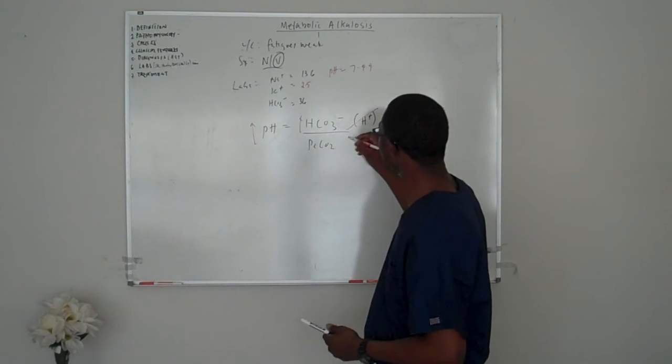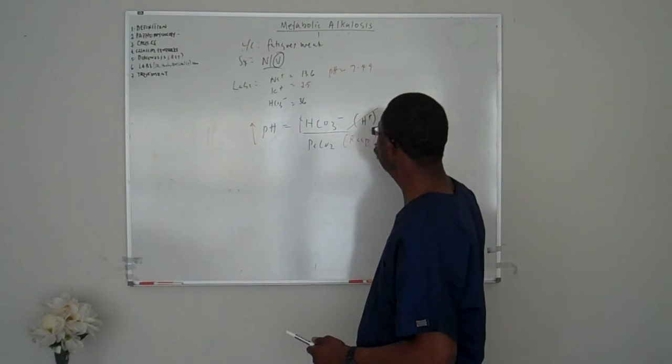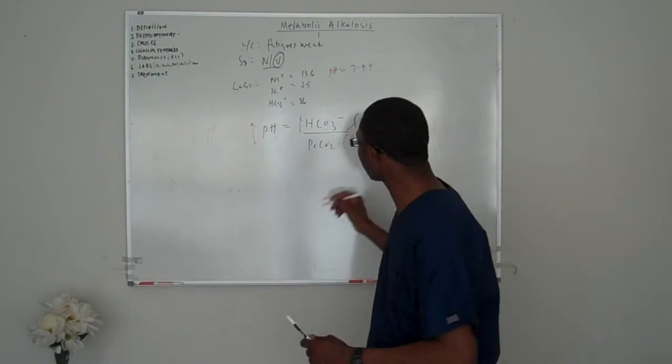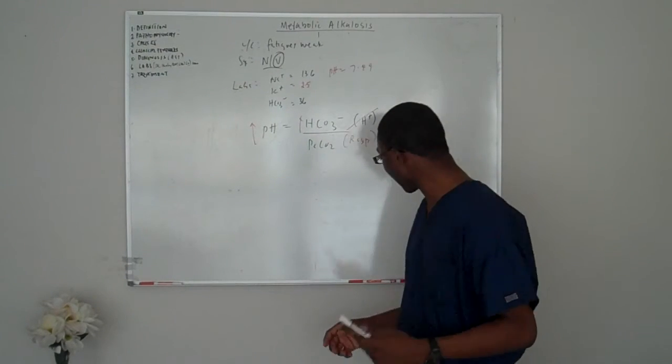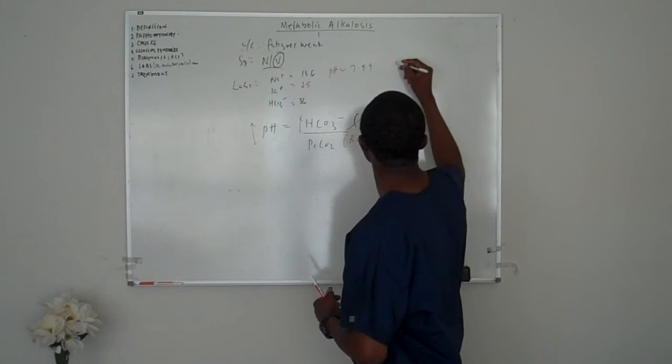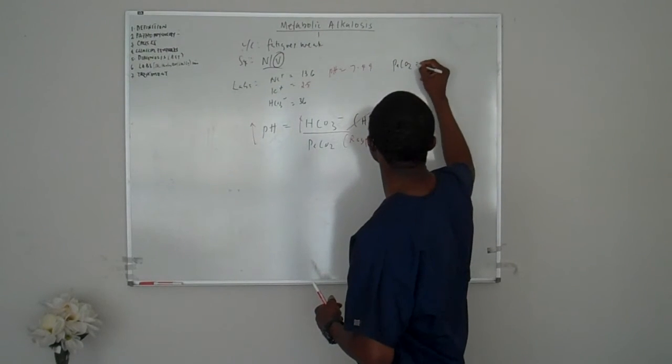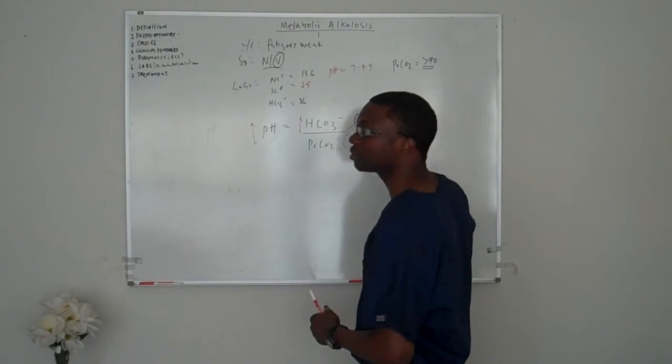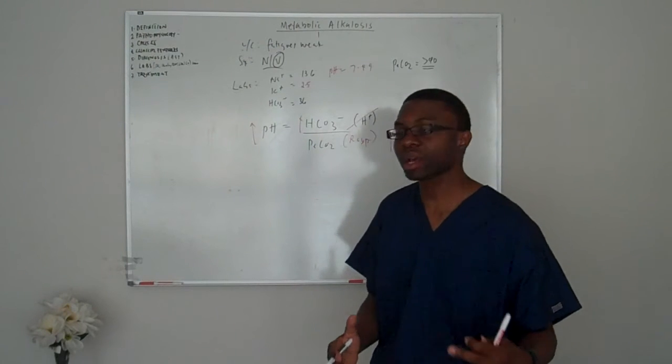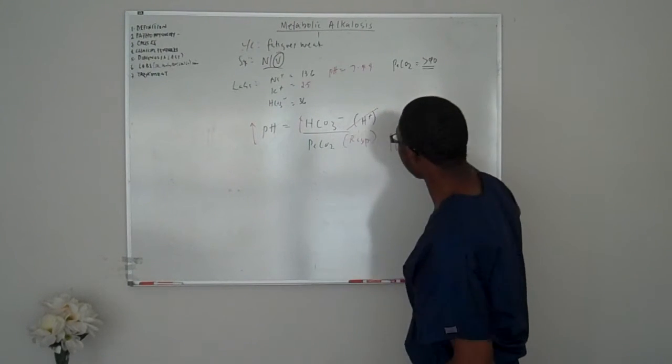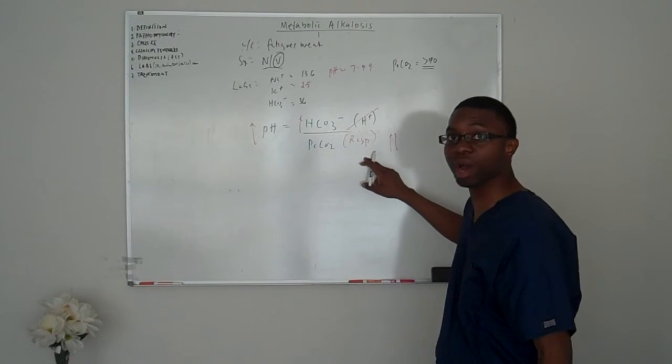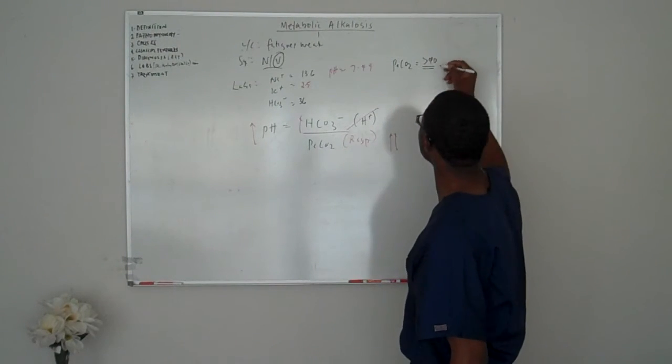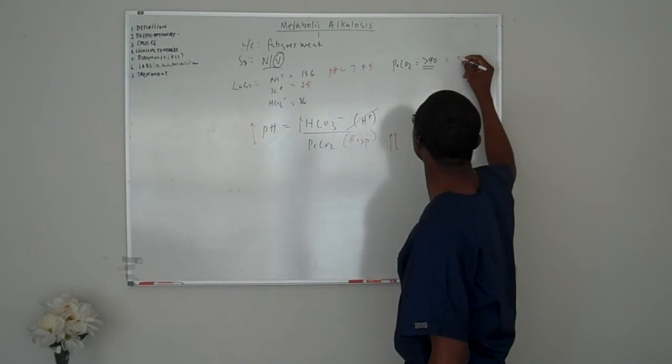By retaining CO2. So I should expect the PaCO2 of this patient to be greater than 40. Does that make sense? Because that's the only way. Remember, once we use up the top, the only way we can figure this out is by coming to the bottom, respiratory compensation. So I should expect the PCO2.